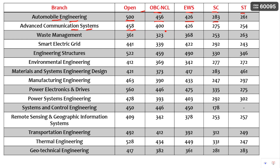Next, Waste Management — one of the specializations from Civil Engineering — the open cutoff is 361, with all other category cutoffs given here. Smart Electric Grids has an open cutoff of 441. Engineering Structures, one of the top branches in Civil Engineering, has an open cutoff of 522, with all other category cutoffs provided.